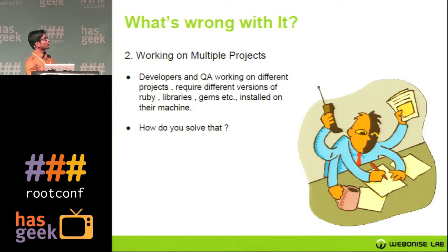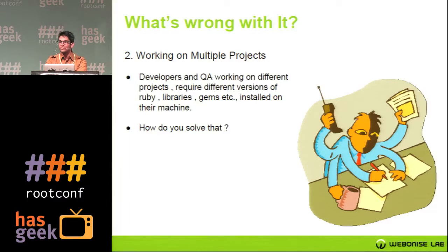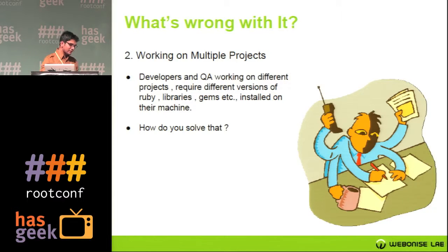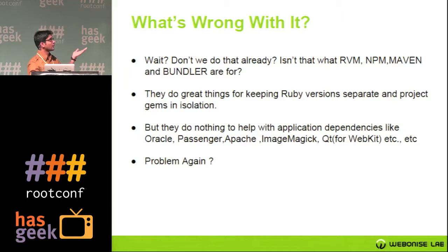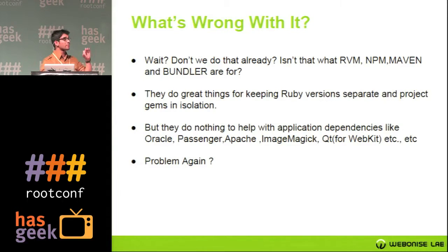The second problem comes across when working on multiple projects, which a lot of you are doing. The major problem is maintaining different versions of the application stack — it could be Ruby, ImageMagick, MySQL, and a lot of things. There are ways that programming languages provide to handle versioning: in Ruby we have RVM and Bundler, NPM for Node, and Maven for Java. But they do nothing to help with application dependencies like Oracle, PostgreSQL, Apache, ImageMagick, Qt, etc. You might be working on one MySQL version while another version doesn't work for a different application.